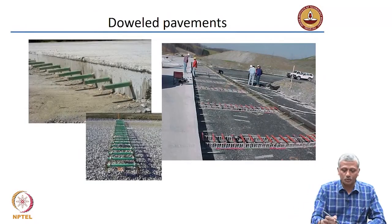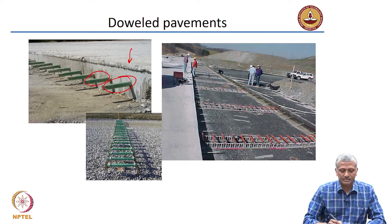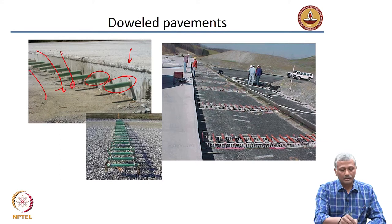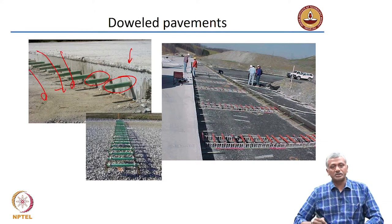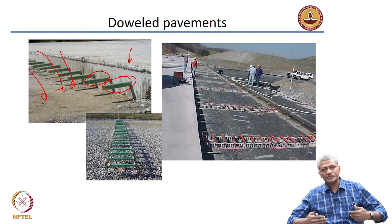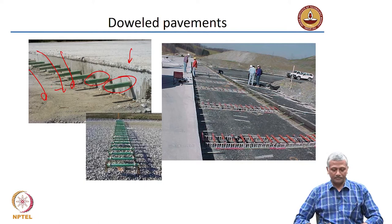And that is exactly what is being shown here. This is one of the slabs, and at the joint you have provided these dowels, and you will be casting the next concrete in this location, so that it simply connects to the adjacent slab.